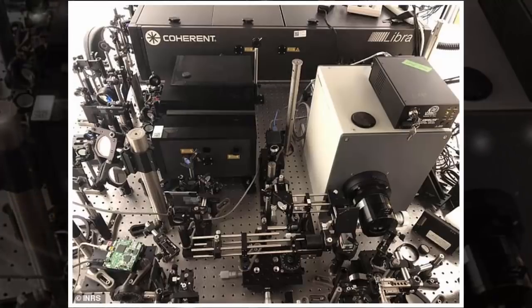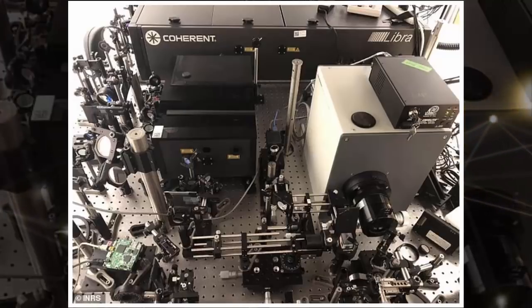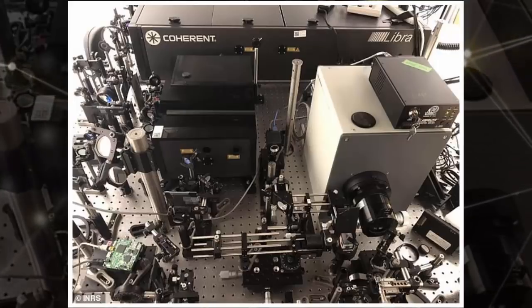The camera is based on a method called compressed ultra-fast photography. But this works at only 100 billion frames per second, so they added what is called a femtosecond streak camera used in scanners.